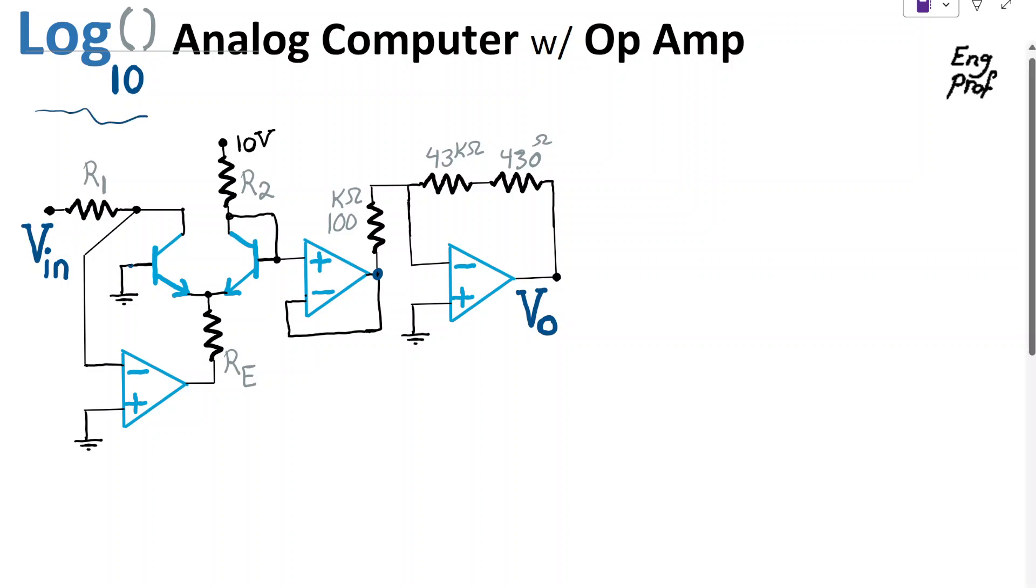A logarithm base 10 analog computer calculator is shown here designed using three ideal op-amps. We want to show that if this circuit is properly biased, then output voltage is proportional to base 10 logarithm of scaled version of input voltage. So it's effectively a base 10 logarithm calculator.